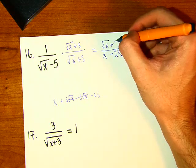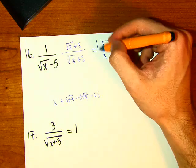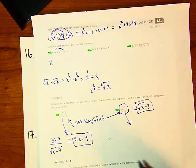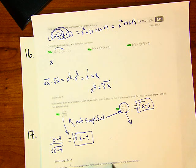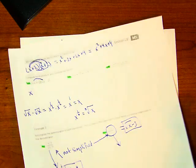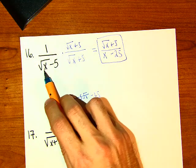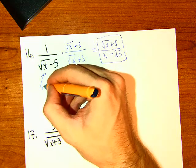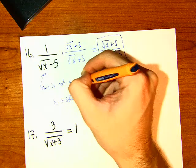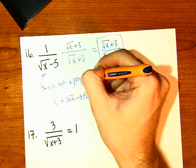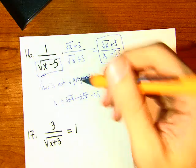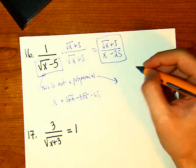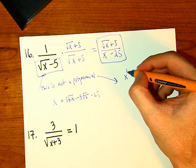So we have square root of x plus 5 over x minus 25, and that's it — we accomplished what we wanted. We put a rational expression in the denominator. The original was not a rational expression because square root of x is not a polynomial.